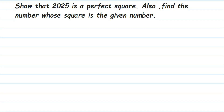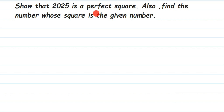Here's a question from squares and square roots: show that 2025 is a perfect square, and also find the number whose square is 2025. So first we have to show that 2025 is a perfect square, and later we have to find whose square it is — that is, we have to find the square root of this number.